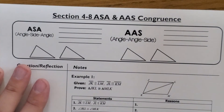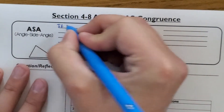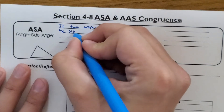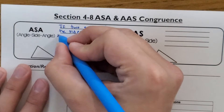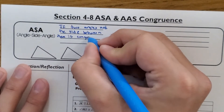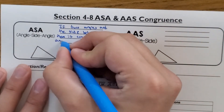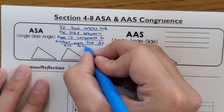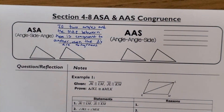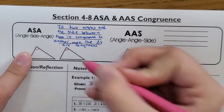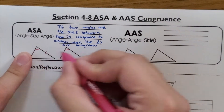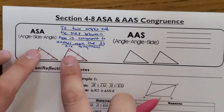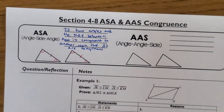ASA stands for angle-side-angle. What this tells us is if two angles and the side between them are congruent to another triangle, then the triangles are congruent to each other. So if this angle is congruent to this angle, and the side between them is congruent, and the angle on the other side is congruent — that's angle-side-angle — these two triangles are going to be congruent.